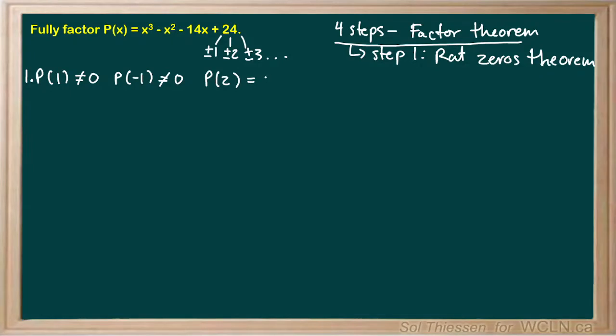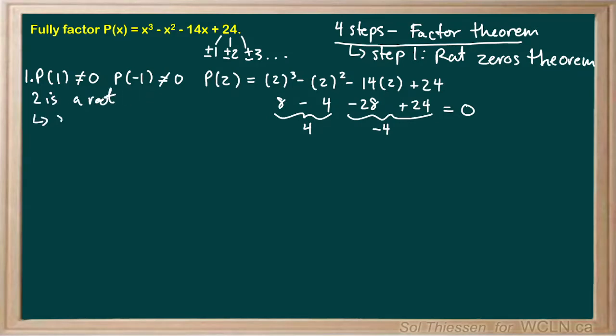So let's see if p of 2 is equal to 0. We'll have 2 cubed minus 2 squared minus 14 times 2 plus 24. So 2 cubed is 8, 2 squared is 4, negative 14 times 2 is negative 28, and then we have plus 24. So 8 minus 4 is equal to positive 4. Negative 28 plus 24 is negative 4, and these two will actually cancel to give us 0. So this actually is equal to 0, which means that 2 is a root, and therefore, x minus 2 is a factor.